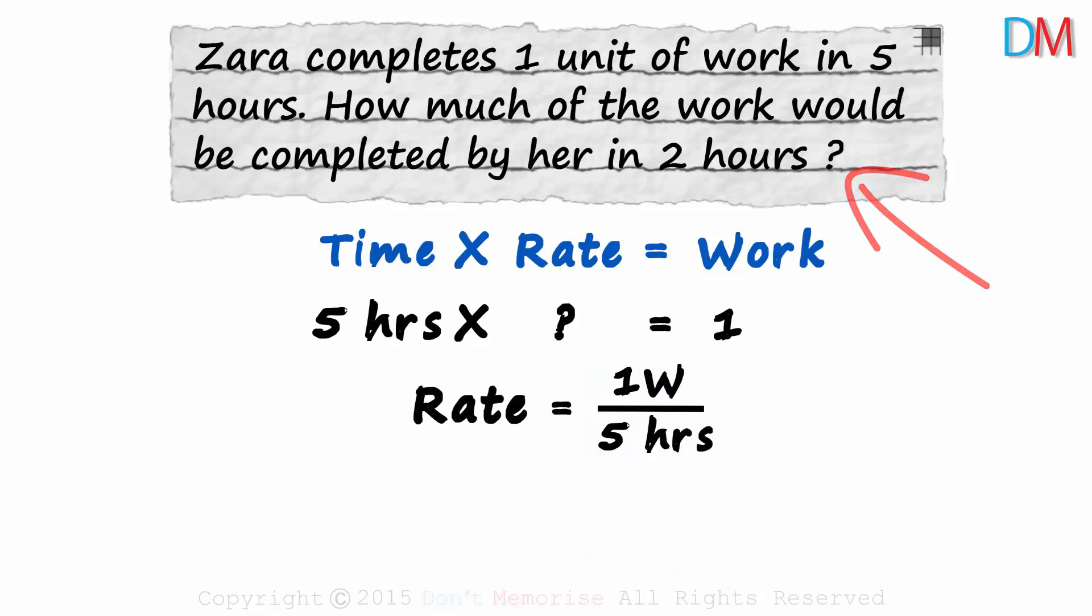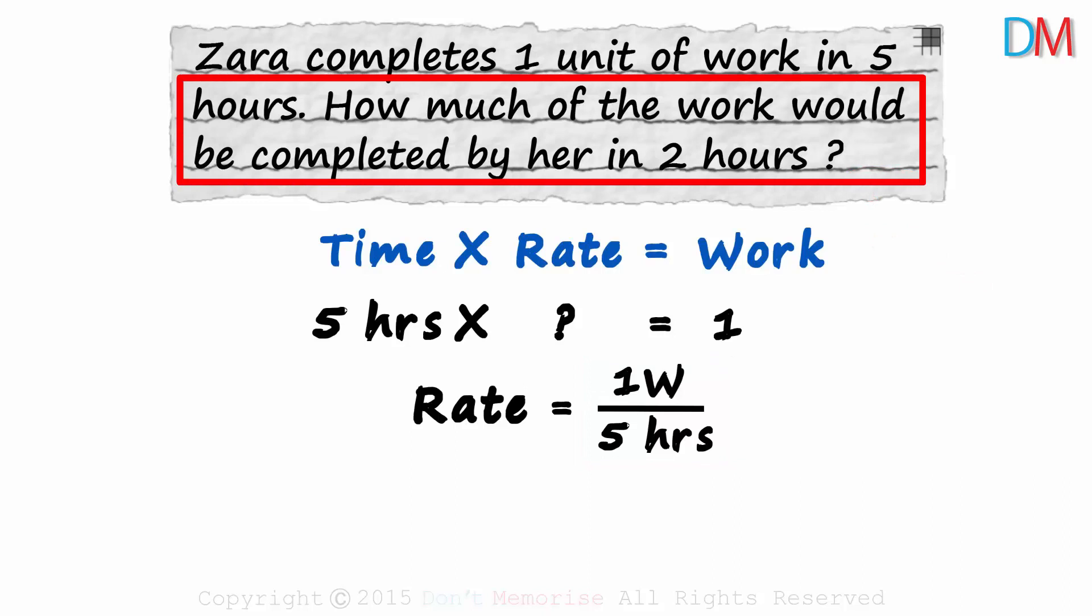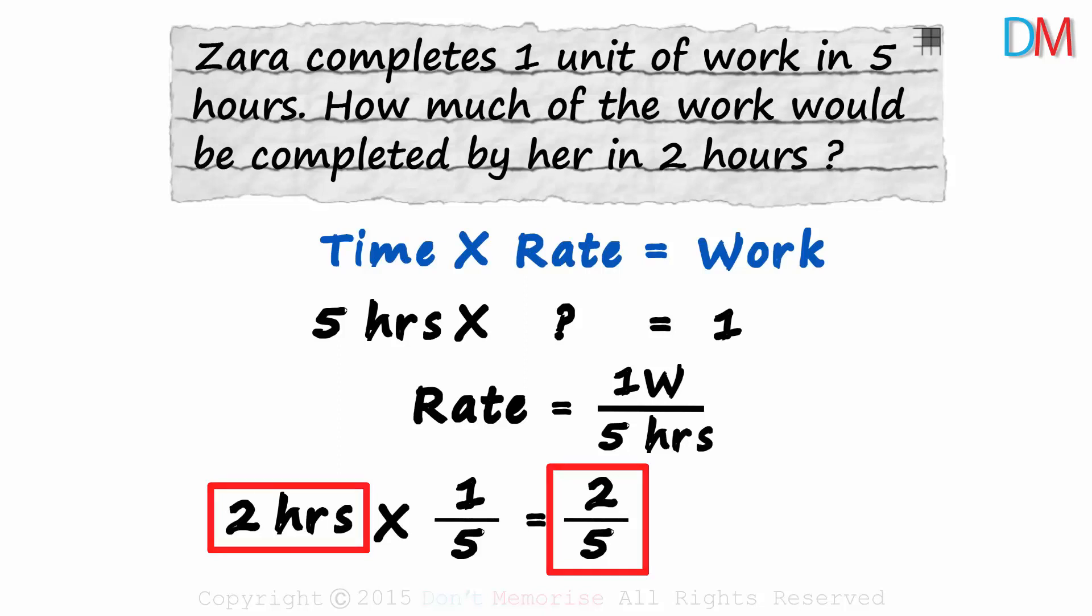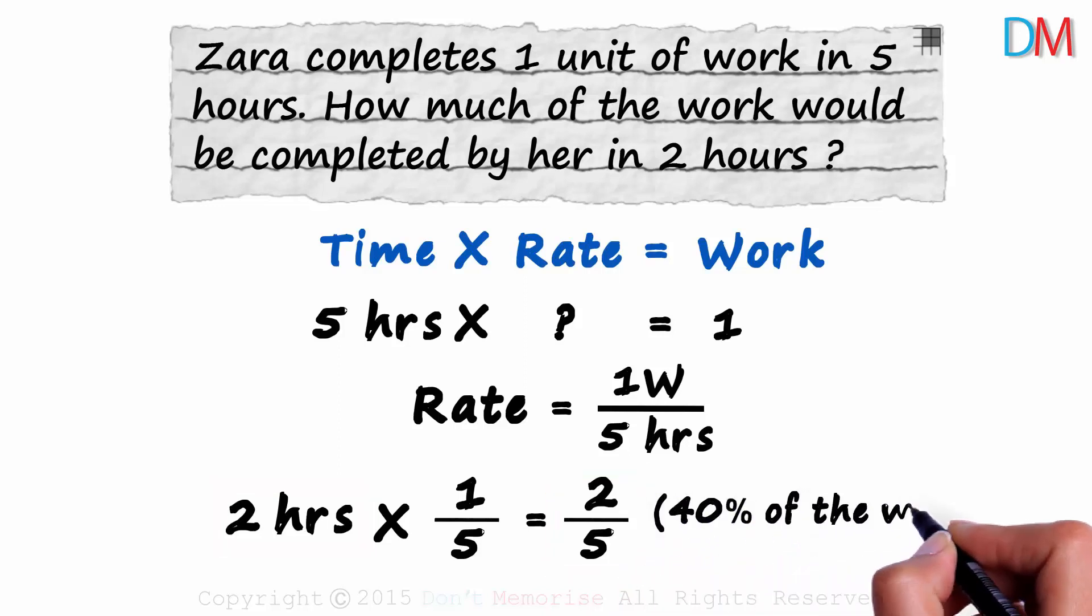Coming back to the question, how much of the work could be completed by her in two hours? Time multiplied by the rate gives us the work done. Two hours multiplied by one over five will give us the work done in two hours. It gives us two over five. It implies that Zara completes two fifths of the work in two hours, or we can say that Zara completes 40% of the work in two hours.